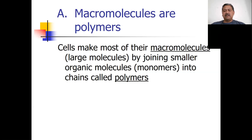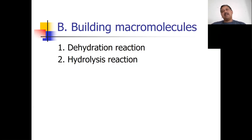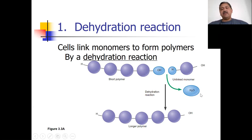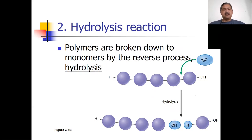You build your polymers one monomer at a time, sticking them together — just like using mortar for bricks — by a process called the dehydration synthesis reaction, or just the dehydration reaction. It's called this because water is being lost. You take the hydrogen off one side and the hydroxyl group off another side, stick those two monomers together, and release water. So the two monomers join to form a slightly longer polymer.